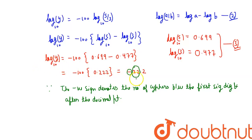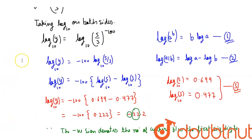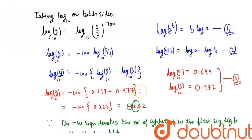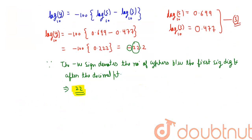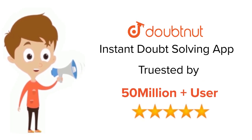Therefore, 22 is the number of ciphers between the decimal point and the first significant digit. Checking the four options, option 2 is 22, so option 2 is the correct answer. For class 6 to 12, IIT JEE, and NEET level — trusted by more than 5 crore students — download the DoubtNet app today.